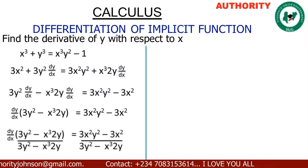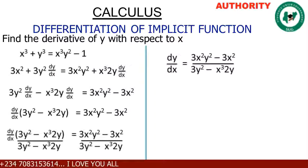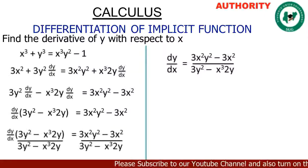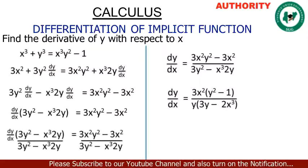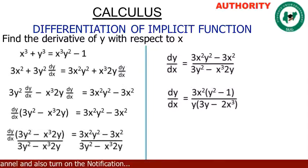Therefore dy/dx = (3s²y² - 3s²) / (3y² - s³ · 2y). In the numerator, factor out 3s² — since it is common to both terms — leaving (y² - 1). In the denominator, factor out y, giving y(3y - 2s³).